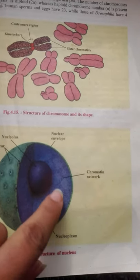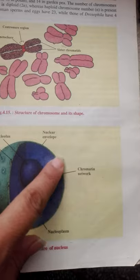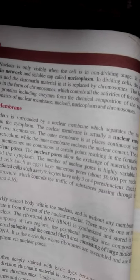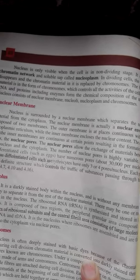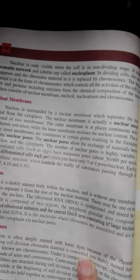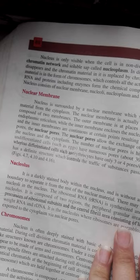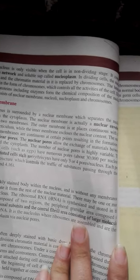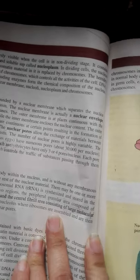When the cell divides, the chromatin network goes into the form of chromosomes. The material inside the nucleus is known as nucleoplasm. During cell division, the nucleolus disappears and the chromatin material is replaced by chromosomes. The hereditary material in the form of chromosomes controls all the activities of the cell.